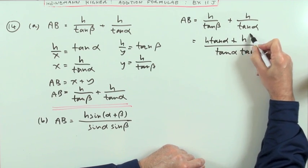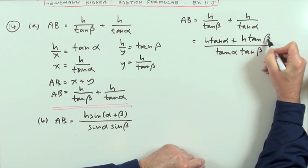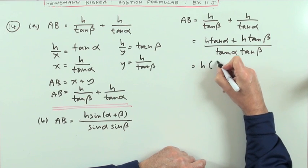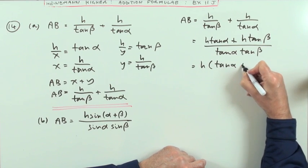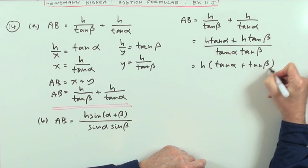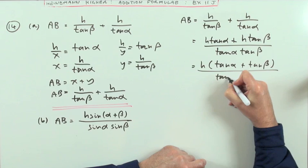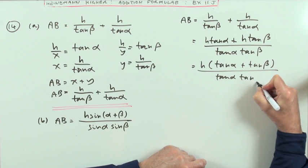And then I've got my common factor of h. That comes out, so I've got tan alpha plus tan beta over the product tan alpha tan beta.